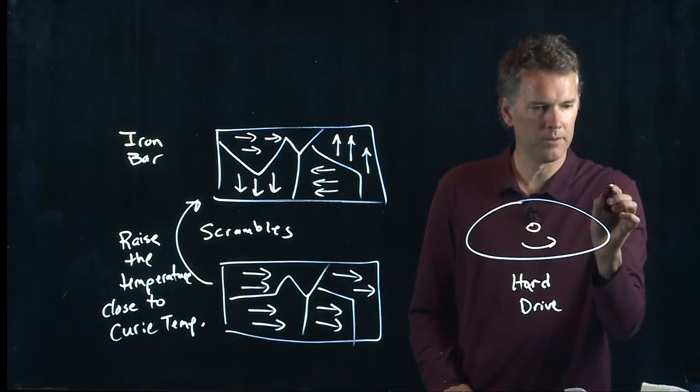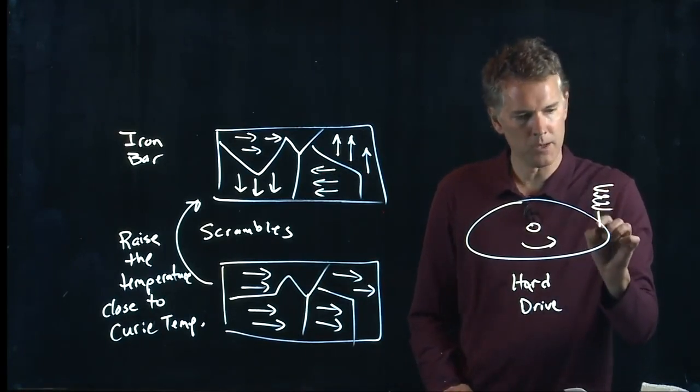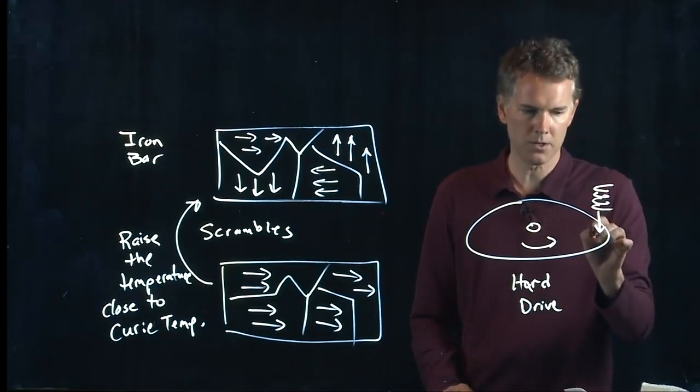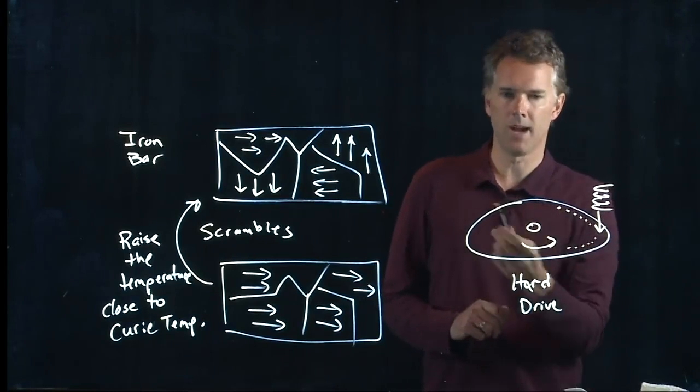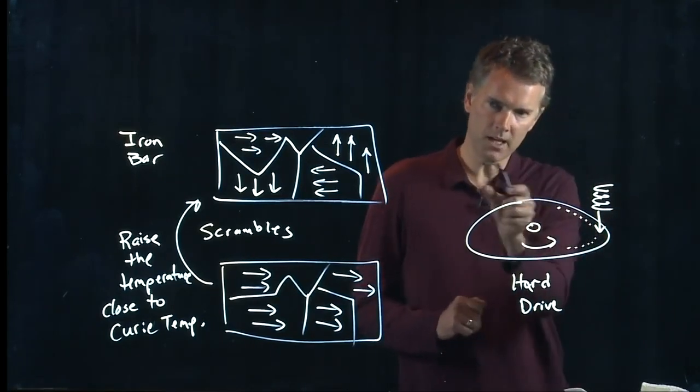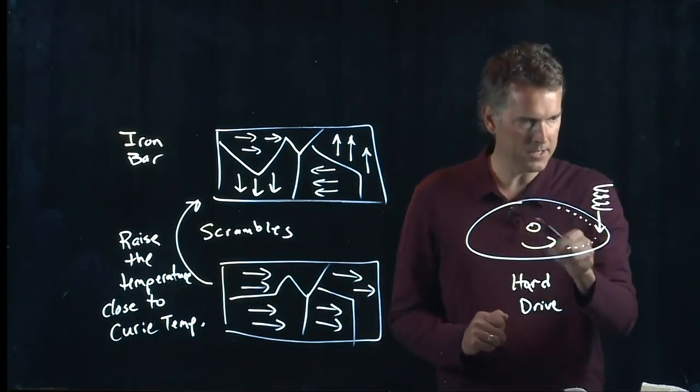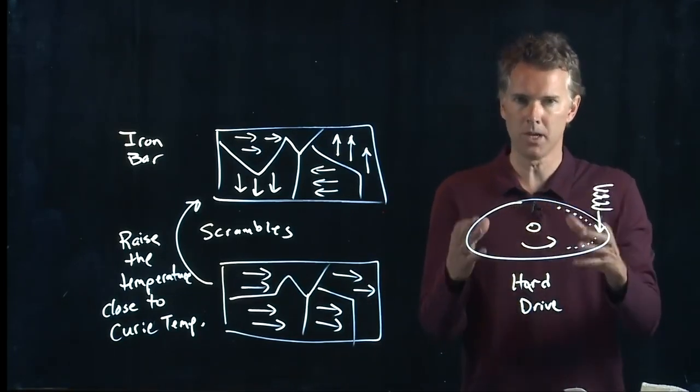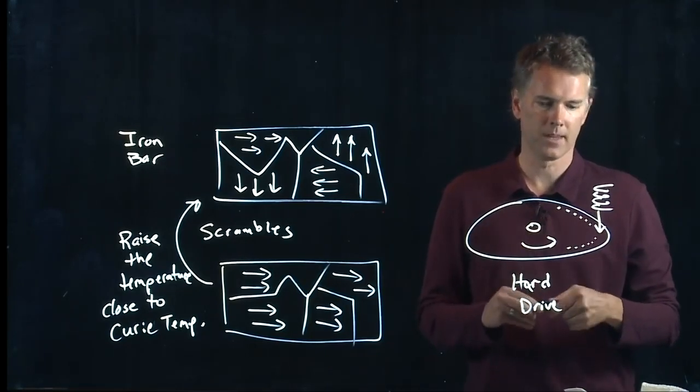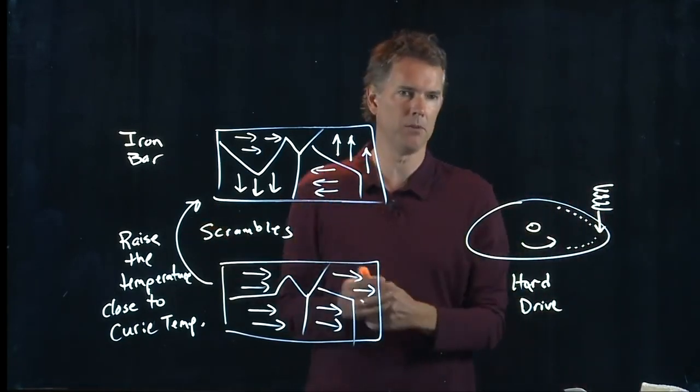And you take a solenoid right here and you write some information onto the hard drive. And this thing spins around and this write head goes in and out. And you can tell this dot to be pointing to the right and this dot to be pointing to the left. And now you can put a whole bunch of information on the hard drive. It's the exact same idea as a tape cassette.